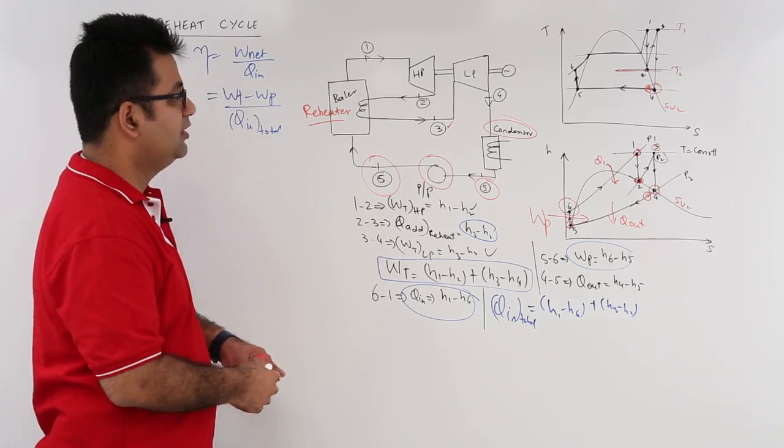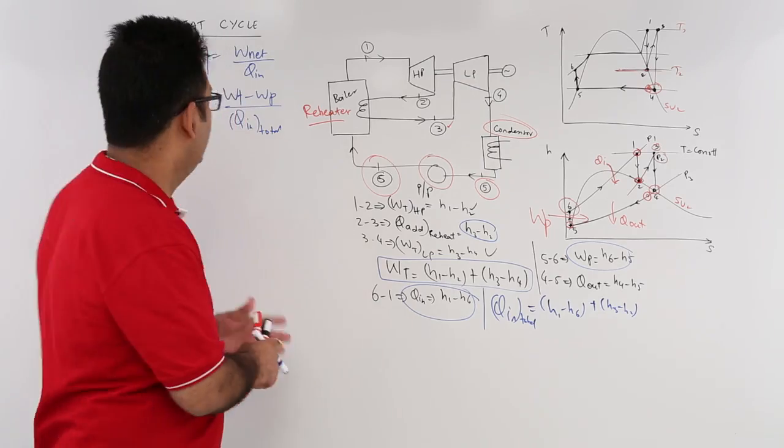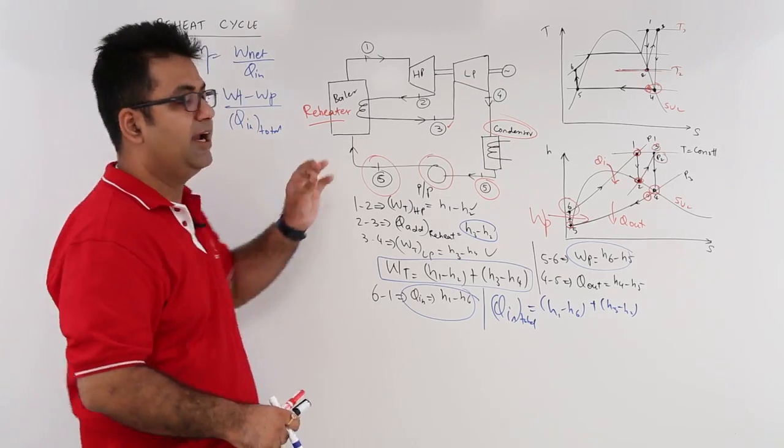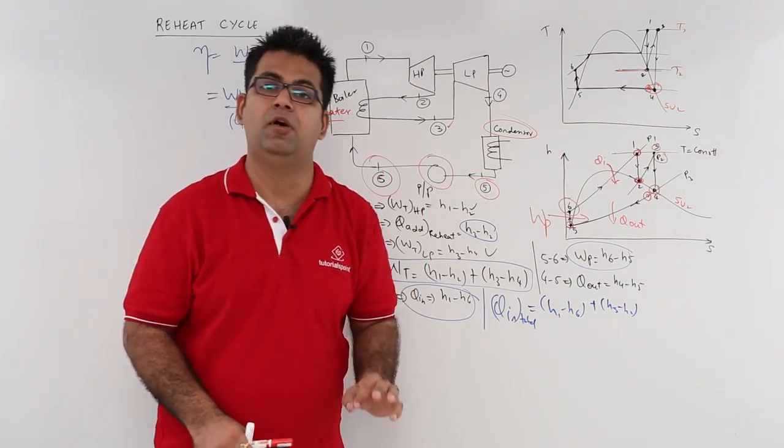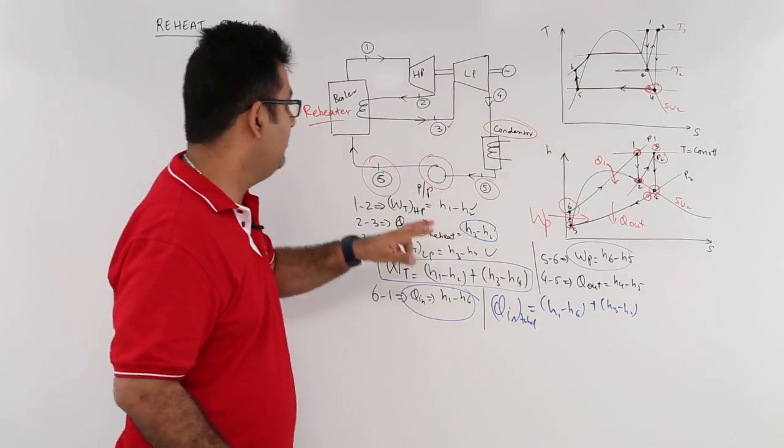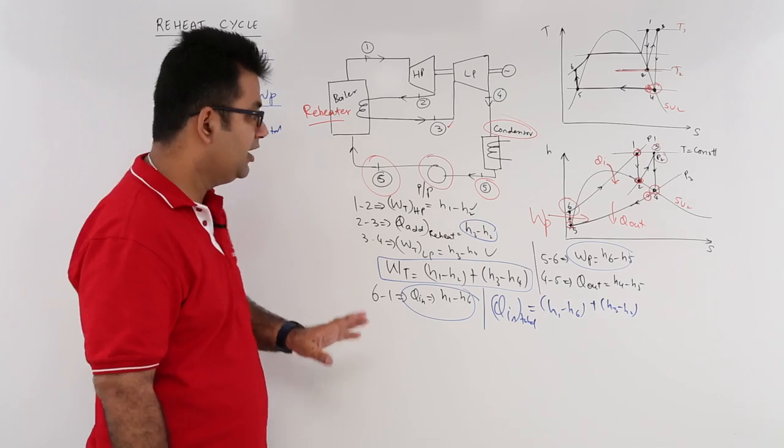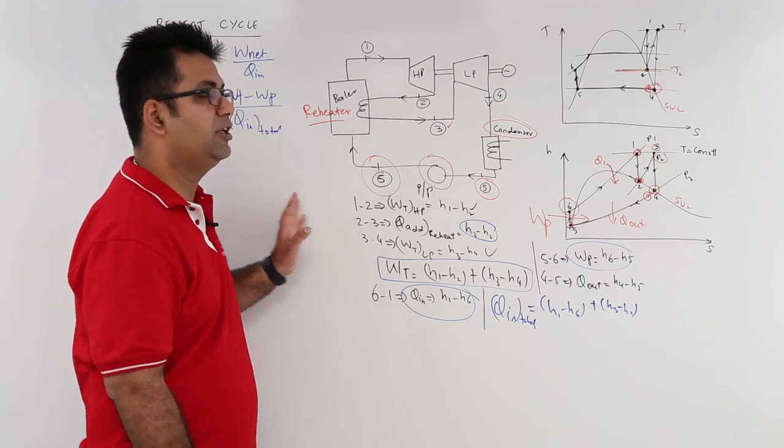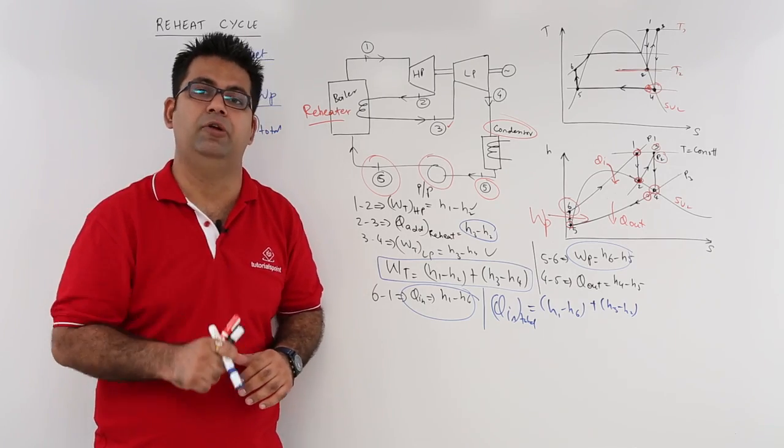This is what you need to understand as a concept for the reheat cycle: it gets rid of the moisture content at the expansion state of the turbine by reheating the steam in a reheater and by using two turbines. This is what we have to do in this particular video. Now let us discuss the reheat factor in the next video.